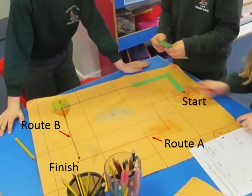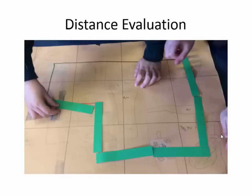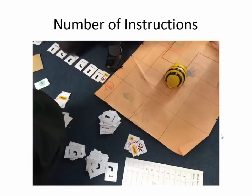I drew two routes in different colors on each of their maps, making sure to go right through the middle of each square. The children then investigated these routes using different measures. For distance, we used 15-centimeter strips of card which they placed down and recorded onto a recording sheet to compare different routes. That was probably the easiest measurement for the children to do, and nearly all of the Year 2 children also did the number of instructions.